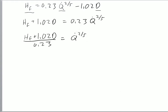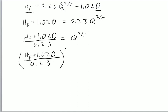And then when we switch powers to the other side, we're just going to reverse them — flip the numerator and denominator. So we have HF plus 1.02 times the diameter divided by 0.23, raised to the five-halves power, is equal to Q dot.